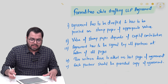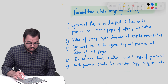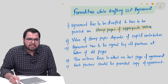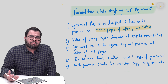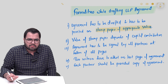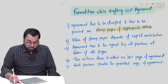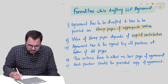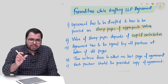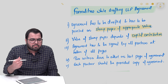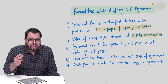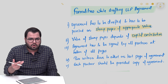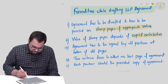Regarding formalities when drafting the LLP agreement: number one, it has to be drafted and printed on non-judicial stamp paper of appropriate value. As per the Indian Stamp Act 1899, if it is an instrument mentioned in the stamp act, stamp duty has to be paid. The stamp value of the stamp paper depends on two factors: one is the capital contribution, and the second is the state in which the LLP is being incorporated, as stamp duty may slightly differ across states.